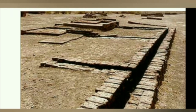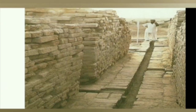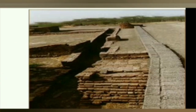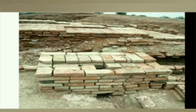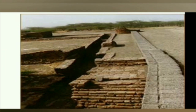Harappan people had an excellent and well-planned drainage system. Water flowed from the houses to the streets, which had drains. Sometimes these drains were covered with bricks. The street drains were equipped with manholes and had inspection holes at regular intervals to clean them. Harappan Civilization had the first toilets with flush in the ancient world. This shows that they paid great attention to sanitation and cleanliness.